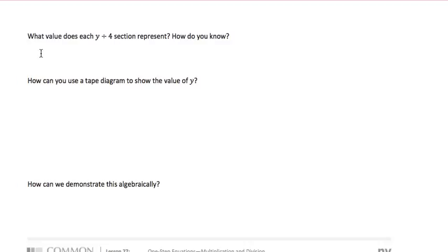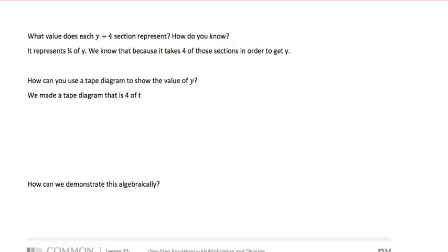When we reason out what value each y divided by 4 section represents, we know that it takes 4 of those sections in order to get y. How can we use a tape diagram to show the value of y? We made a tape diagram that is 4 of those sections long.